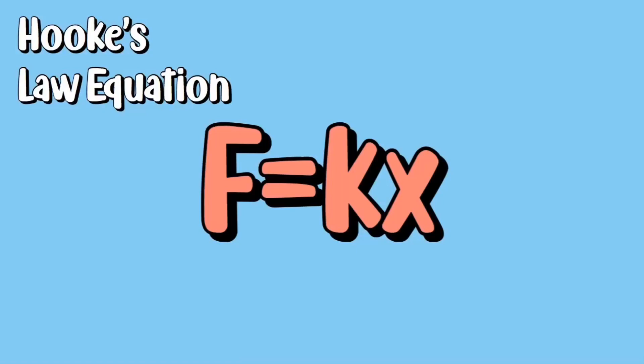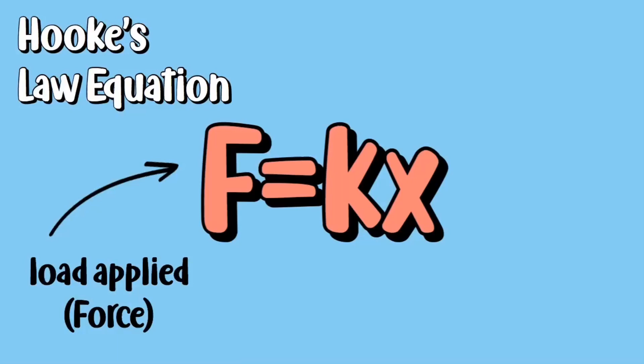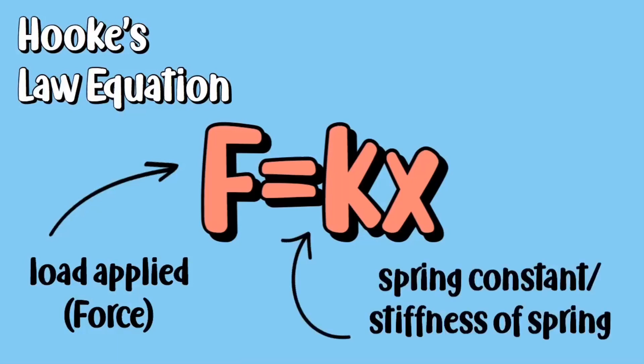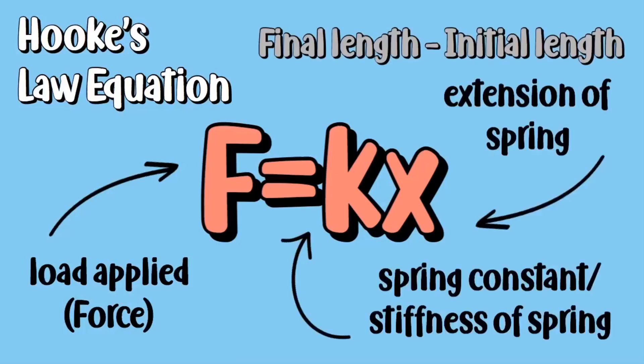So this is the Hooke's law equation. F is the load applied to it, which is the force. K is the spring constant or the stiffness of the spring, and x is the extension of the spring which can be calculated by subtracting the initial length from the final length.